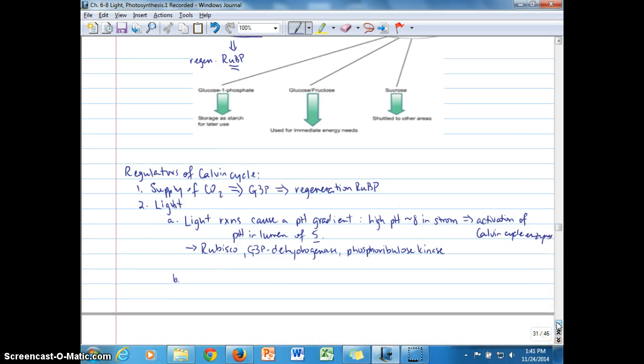And there's where we looked at the different possible fates of G3P. And so we started talking about the regulation of the Calvin cycle with regard to the supply of CO2 and the formation of G3P to prioritize the regeneration of RU-BP. The next topic that we started to talk about in terms of regulating the Calvin cycle was factors that respond to light. So the first one we talked about was how in the light reactions that pH gradient across the thylakoid membrane ideally produces a pH of 8 in the stroma, which activates these Calvin cycle enzymes.